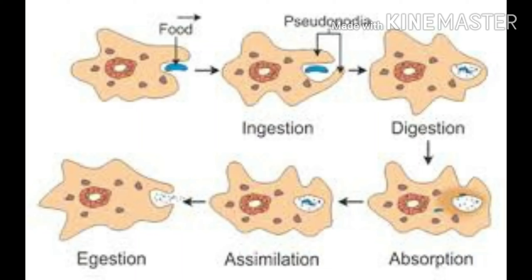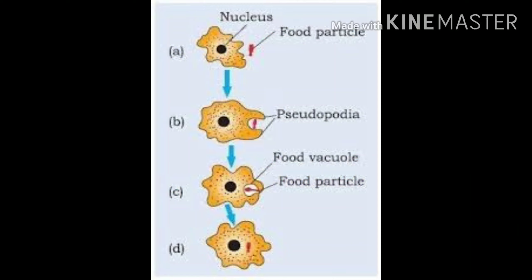Amoeba, which is a unicellular organism, also has holozoic nutrition. It's quite strange, isn't it? It has all five steps: ingestion, digestion, absorption, assimilation, and egestion. As you can see in the picture. We will learn in detail in our interactive classes.